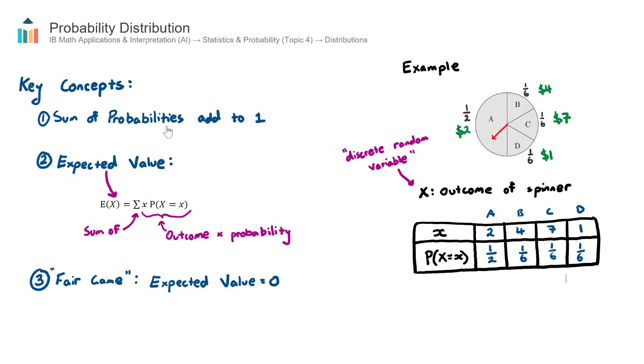Now let's talk about the first key concept. The first key concept is the sum of the probability. So this second row here must add up to 1. And in some IB exam questions, you might be missing a probability, and you need to go ahead and find it. In order to find it, you can say, well, they all need to add to 1. So let's figure out the remaining value.